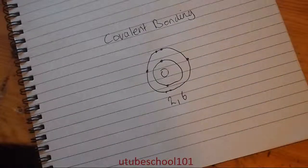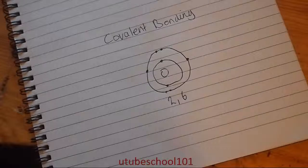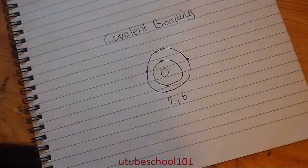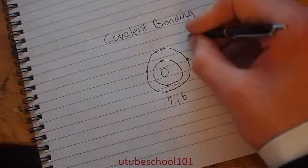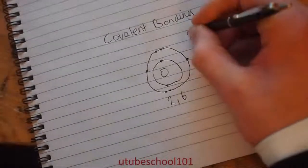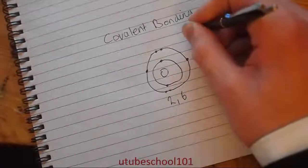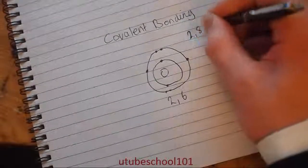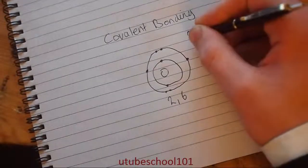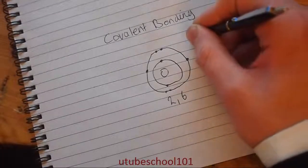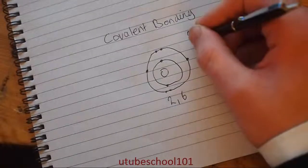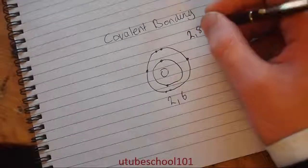So we have this oxygen atom and its desire, its natural desire, is to get a full shell. And a full shell will consist of the following thing. In the first shell, its maximum it can hold is two. So when it gains two electrons, it has a full shell.